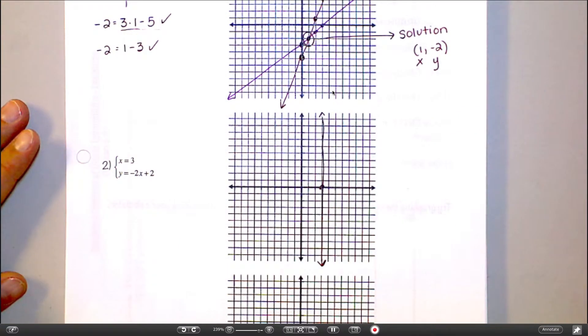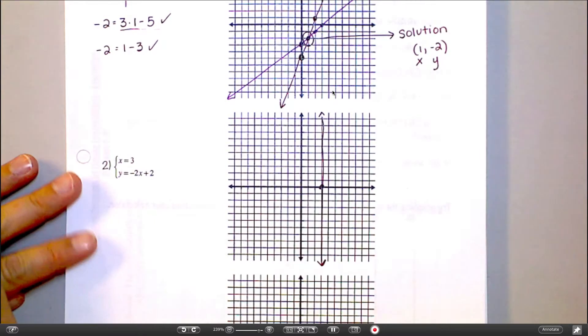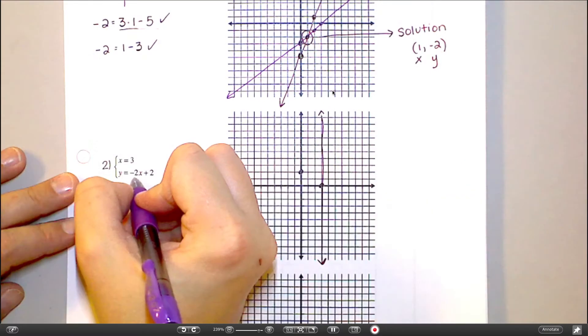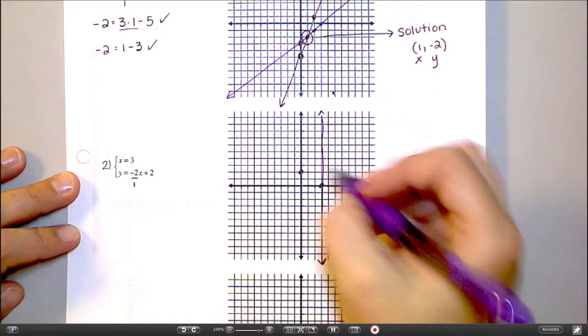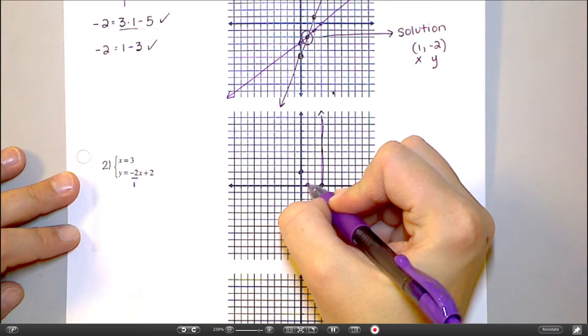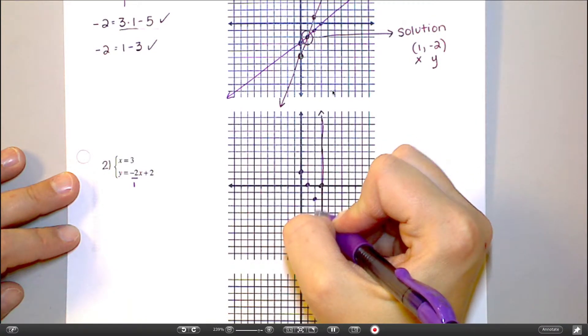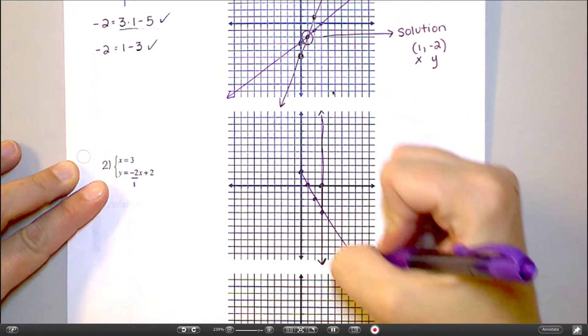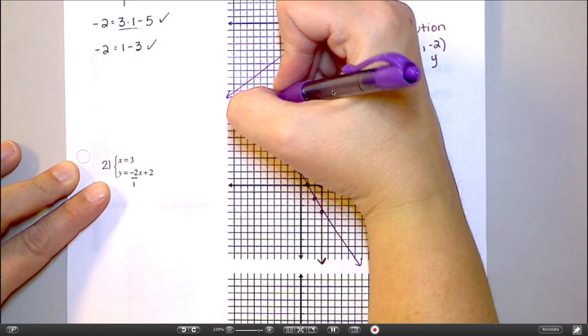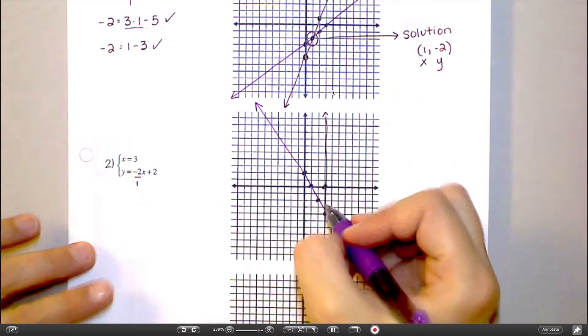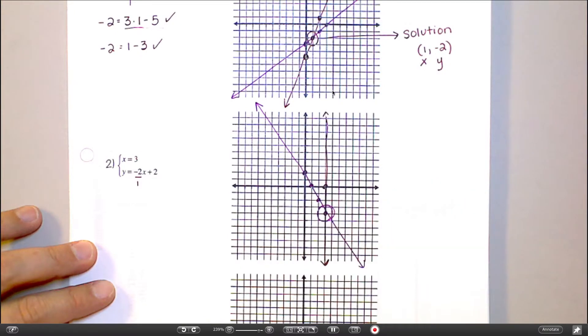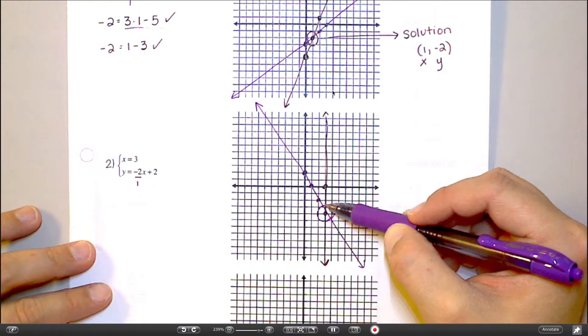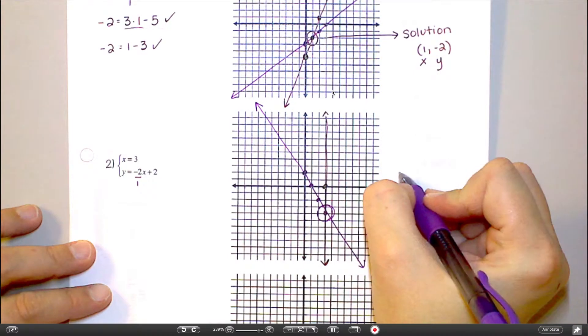And then y equals negative 2x plus 2 is going to start at plus 2 on the y. And then if my slope is negative 2 over 1, down 2 and to the right 1. Good. Draw my line. Draw my line. My solution then would be the place where they intersect. It's this point right here. And that is at 3, negative 4. Do you agree with me there?